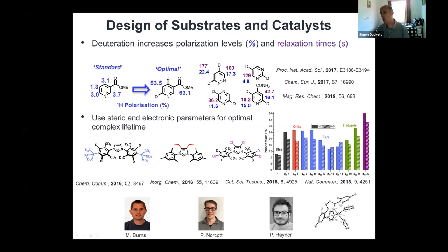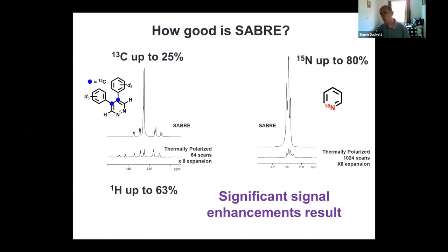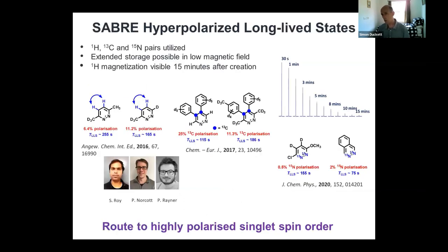There are a number of people who have undertaken this work, and I'd like to point out Peter Rayner here, who has made many of these systems and led on many of these measurements. How good is SABER for heteronuclei? We're still optimizing this, but in this particular instance where we've got a carbon-13 pair and long relaxation times, we can achieve 25% carbon-13 polarization. Using the optimum catalysts and some of the SABER-SHEATH approaches we'll learn about next, you can actually get 80% nitrogen-15 polarization.